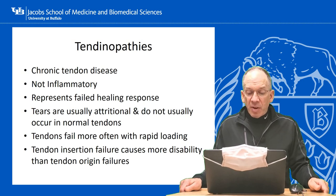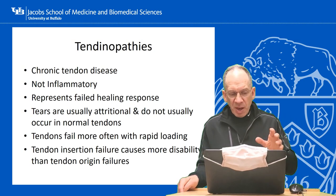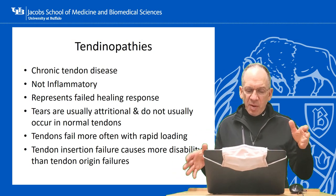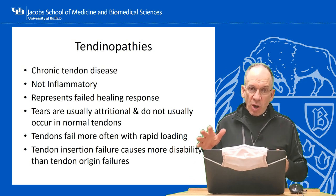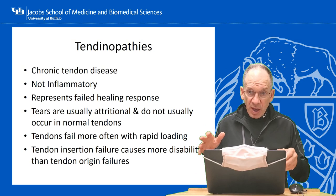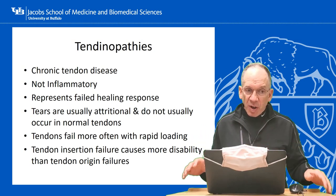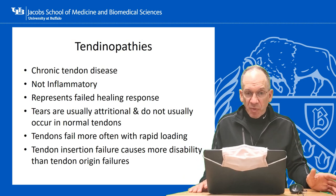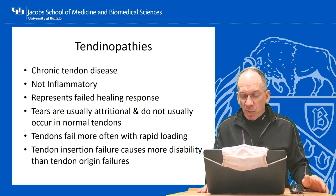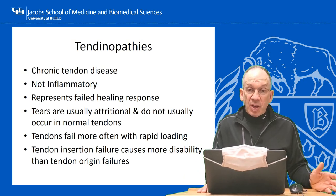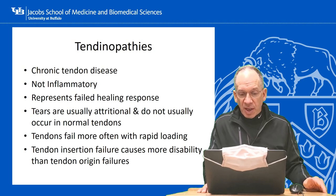Tendon insertion failures cause more disability than tendon origin failures. As long as the muscle-tendon unit still crosses the joint and the insertion is intact, even if the proximal edge is damaged it will still function partially. But if you rupture at the insertion and it no longer crosses the joint, it can't do its job. In the case of the Achilles tendon, you can't stand on your toes if it's not attached to the calcaneus anymore.